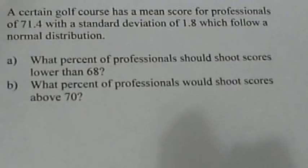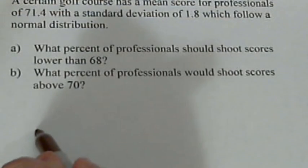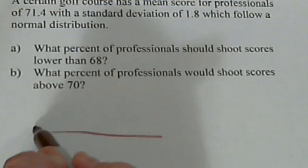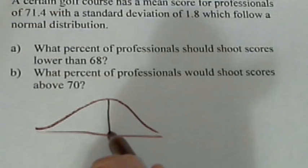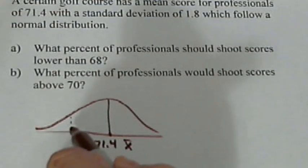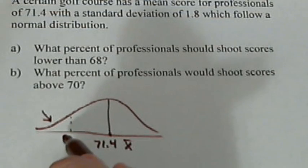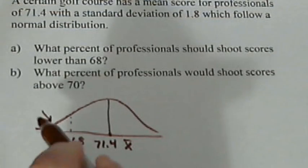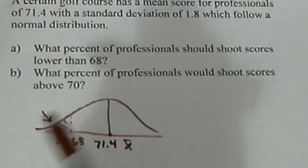Okay, so first of all, let's draw a quick picture of it. Here's our bell curve. Here's our mean, which up above was 71.4. And we want to know what percent shoot lower than 68. So there's the region we're looking for. And we want to know what percent are lower than 68.